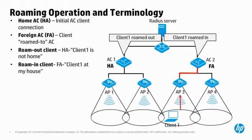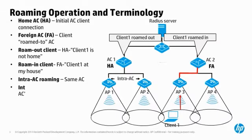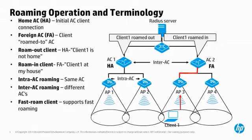If Client 1 had roamed to another AP controlled by its home controller, this would be called an intra-AC roaming event. However, since the client roamed between APs on different ACs, this was an inter-AC roaming event. Any client that supports fast-roaming is called a fast-roam client.